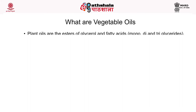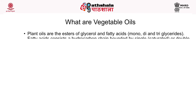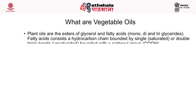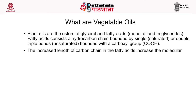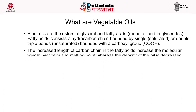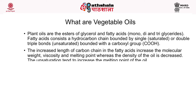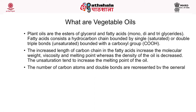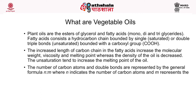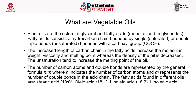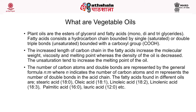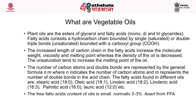Now let us discuss what vegetable oil is. Plant oils are esters of glycerol and fatty acids — that is mono, di, and triglycerides. Fatty acids consist of a hydrocarbon chain bounded by single or double bonds and bounded with a carboxyl group. The increased length of carbon chain in the fatty acid increases molecular weight, viscosity, and melting point, whereas the density of the oil is decreased. The unsaturation tends to increase the melting point of the oil. The number of carbon atoms and double bonds are represented by the formula N:M, where N indicates the number of carbon atoms and M represents the number of double bonds in the acid chain.